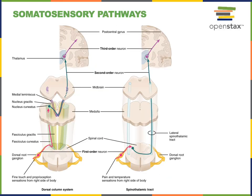The sensory pathway for the somatosensory modalities starts with the first order neuron, or primary neuron — the afferent neuron that relays information through the peripheral nervous system into the central nervous system. This primary first order neuron will have its soma, its cell body, in the peripheral nervous system in a ganglia known as the dorsal root ganglion. The first order neuron then forms a synapse with the second order neuron within the central nervous system, either in the spinal cord or in the brain stem.